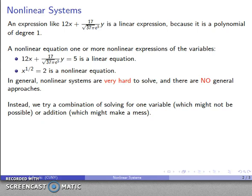We tend to try a combination of two things. We might try to solve for one variable, and that might not actually be possible. Our nonlinear system might not be solvable for one of the variables. The other thing we could also try is our addition method, and again this might not work. This might just make a horrible mess of things. And the key to nonlinear systems is there is no general approach. We try what we can.